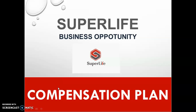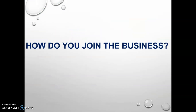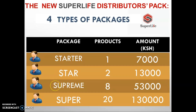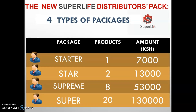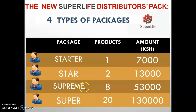Now in Super Life, the first thing everyone asks is: how do I join the business? Before you join you have to register on one of four packages. The Starter package comes with one pack of STC 30 and costs 7,000 Kenyan shillings. The Star package comes with two packs and costs 18,000 KES. The Supreme package comes with eight packs and costs 53,000 KES. The Super package comes with twenty packs and costs 130,000 KES.